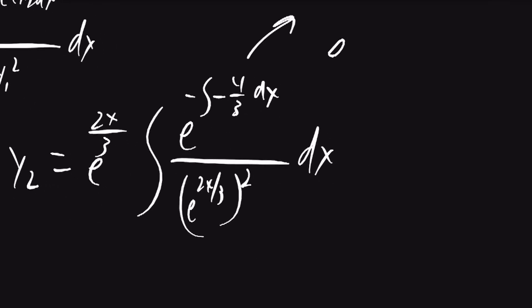The numerator will be e to the power of the integral of 4 thirds dx, which is equal to e to the 4 thirds x. For the denominator, it'll be e to the 4x over 3.